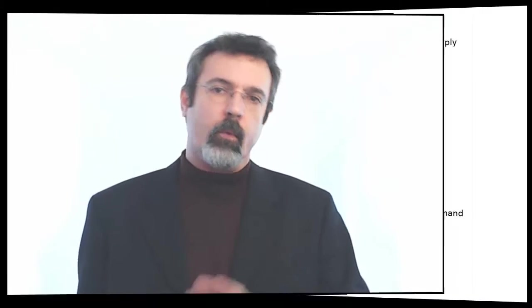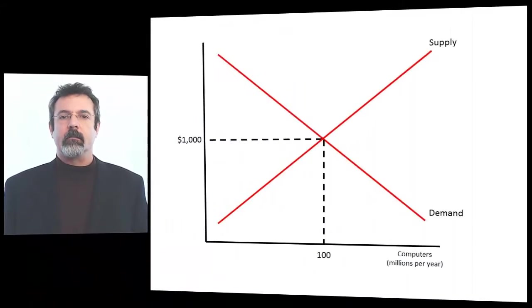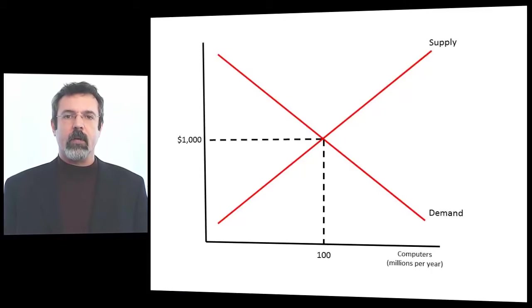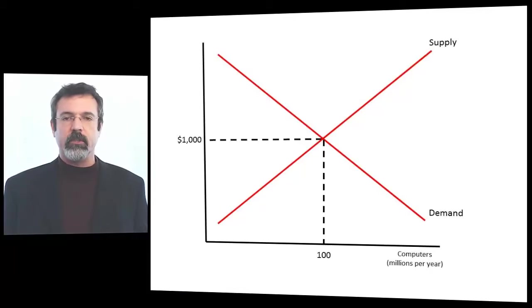Let's look at the effect of a tax on the market for computers. We start by looking at the market without the tax. Without a tax, the equilibrium price of computers is $1,000 each, and there are 100 million computers bought and sold each year.